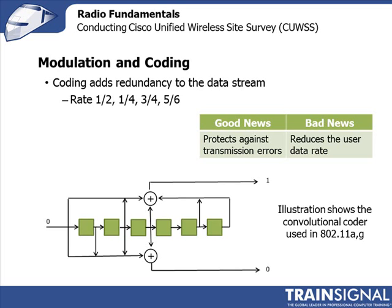Coding is a way of adding redundancy into the data stream to enable recovery of your data. This is very important in radio, because things happen over the air and bits are always being lost. If you had to retransmit the whole packet every time, you wouldn't get anything across the radio link — so you always want to add some redundancy in radio.